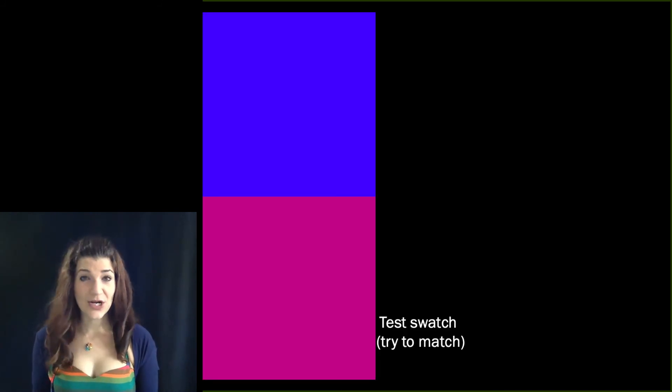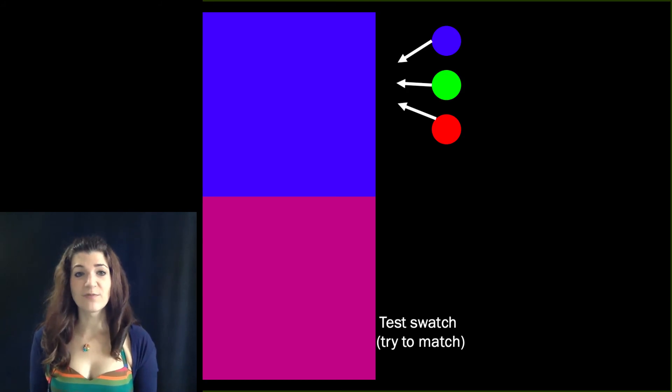This can be done empirically in a lab setting where you present participants with one color, like this kind of fuchsia square on the bottom, and then you let them adjust the levels of blue and green and red light sources to get them to try to match the test swatch, that fuchsia color. For people with typical human color vision, any color can be made with a match of these three primaries.